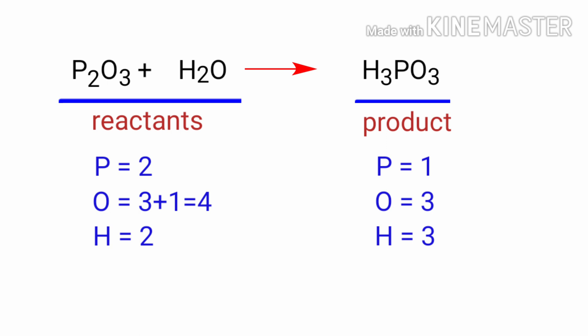To balance the chemical equation we need to make use of coefficients. A coefficient is a number that we place in front of a chemical formula. In this equation we need to balance the phosphorus atoms first. To do this we need to put a coefficient of 2 in front of H3PO3.